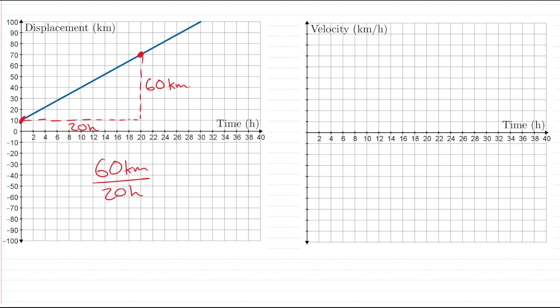If we divide 60 by 20, we get three, which represents three kilometers every hour. So three kilometers per hour.